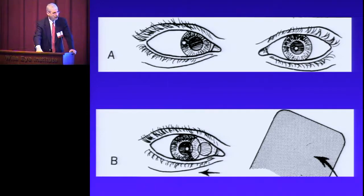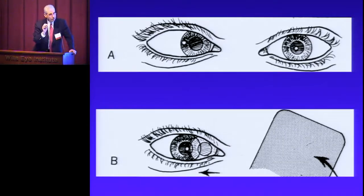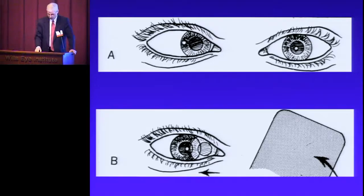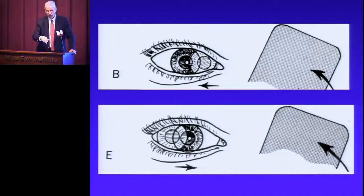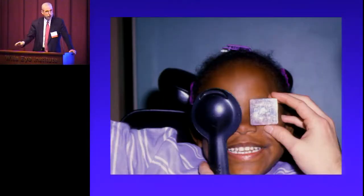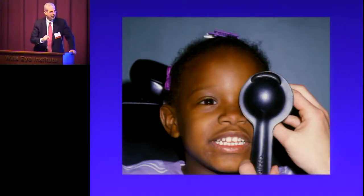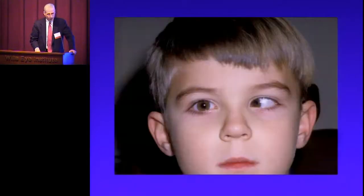Here is a diagram of a very large esotropia. We place an occluder over the fixating eye; the non-fixating eye takes up fixation, and we know there is esotropia from the light reflex and the cover-uncover test. Here's an eye going out and coming in to take up fixation. Now we know from the cover-uncover test that there is movement, and we'd like to know how much — how much deviation does that child have? We place increasing amounts of prism over one eye and go back and forth until there is no longer any movement of the uncovered eye.